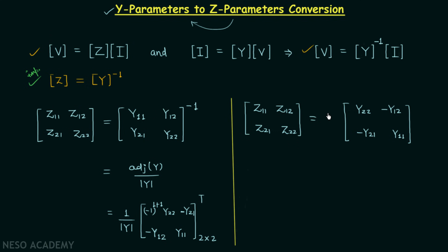Then we divide by the determinant of the matrix. The determinant of the admittance matrix is y11 multiplied by y22 minus y21 multiplied by y12.